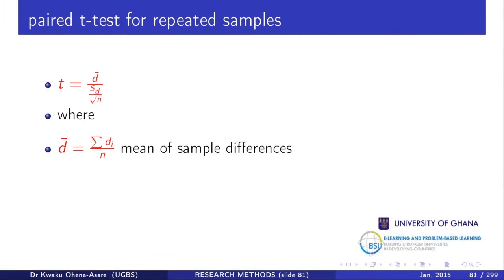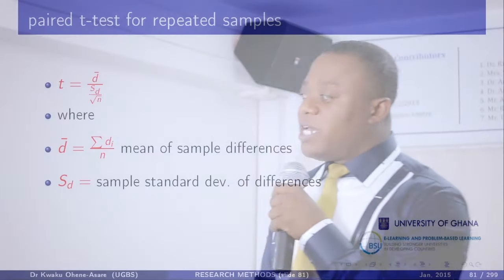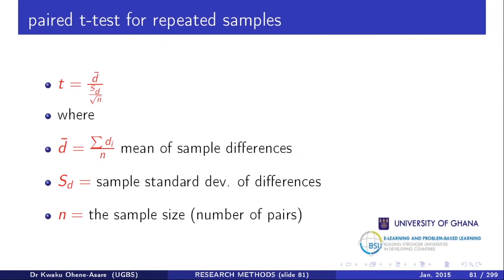Once you have all differences, find their mean by summing them and dividing by the total sample size n — that is D-bar. That is the numerator of the t-calculated. The denominator is the standard deviation of the differences divided by the square root of n. The standard deviation formula is complex — we call it the Megamama formula.